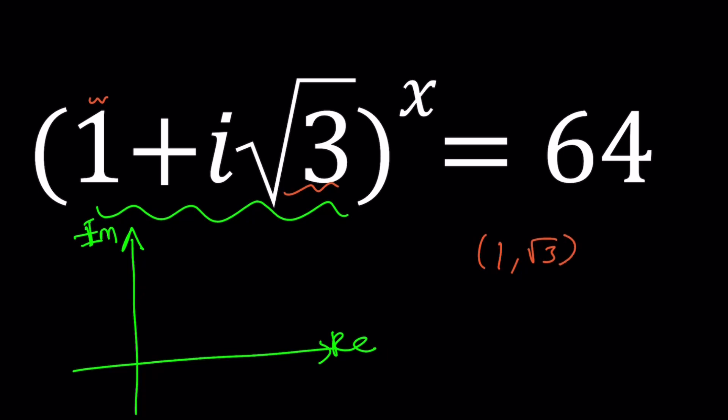So, root 3 is greater than 1, it's about 1.7. So if we take this to be 1 unit, it's probably going to be something like this. And then, this is going to be root 3i, and this is going to be 1. And then when I plot that point, that's going to represent my number, 1 plus i root 3.